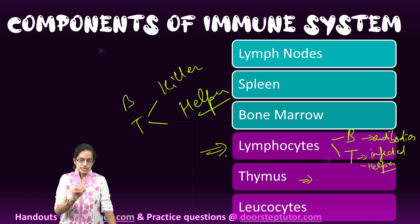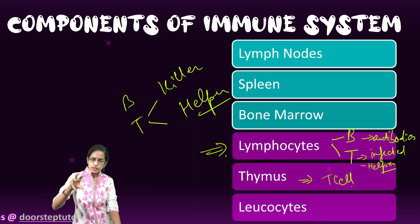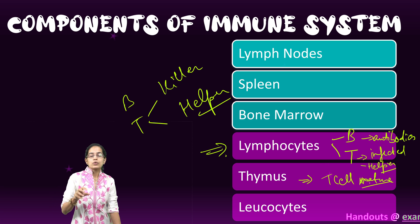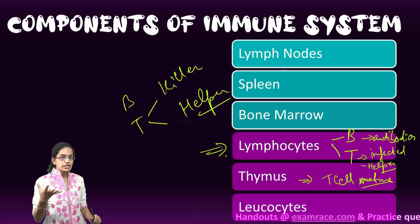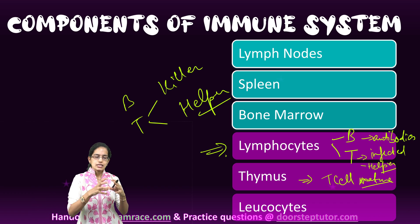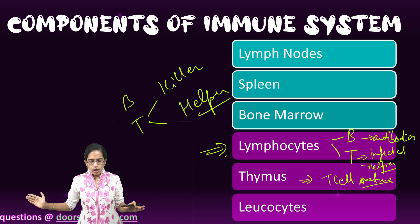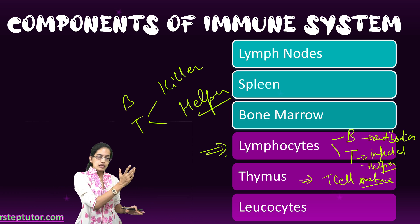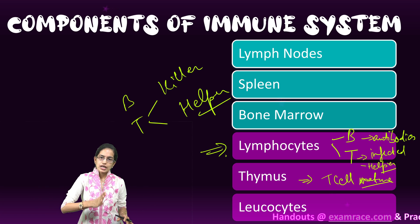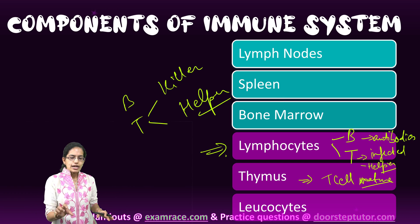The thymus is the organ where T cells mature. Lymphocyte T cell maturation takes place in the thymus. Notably, the thymus is large in children, but as the child grows and attains puberty, it reduces into fat and is no longer present. This is why younger children tend to have a greater immune response. The thymus is located below the breastbone.